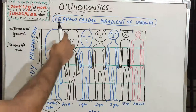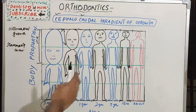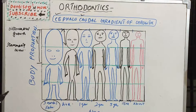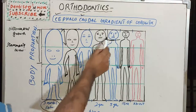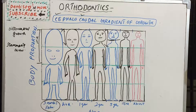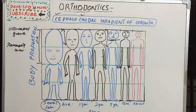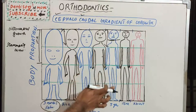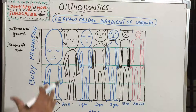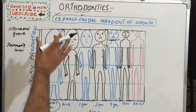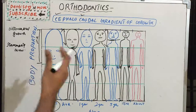During childhood, the pattern of growth continues with lengthening of the torso and limbs. At adulthood, the head is reduced to one eighth of the entire body length. The lower limb occupies one half of the total length at adulthood. So from fetal life to adulthood, the head goes from one half to one quarter to one eighth of total body length.